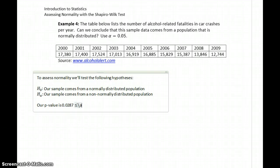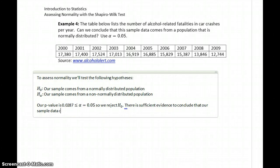This p-value is less than or equal to our value for alpha, which is 0.05. So we reject the null hypothesis. There is sufficient evidence to conclude that our sample data comes from a non-normally distributed population.